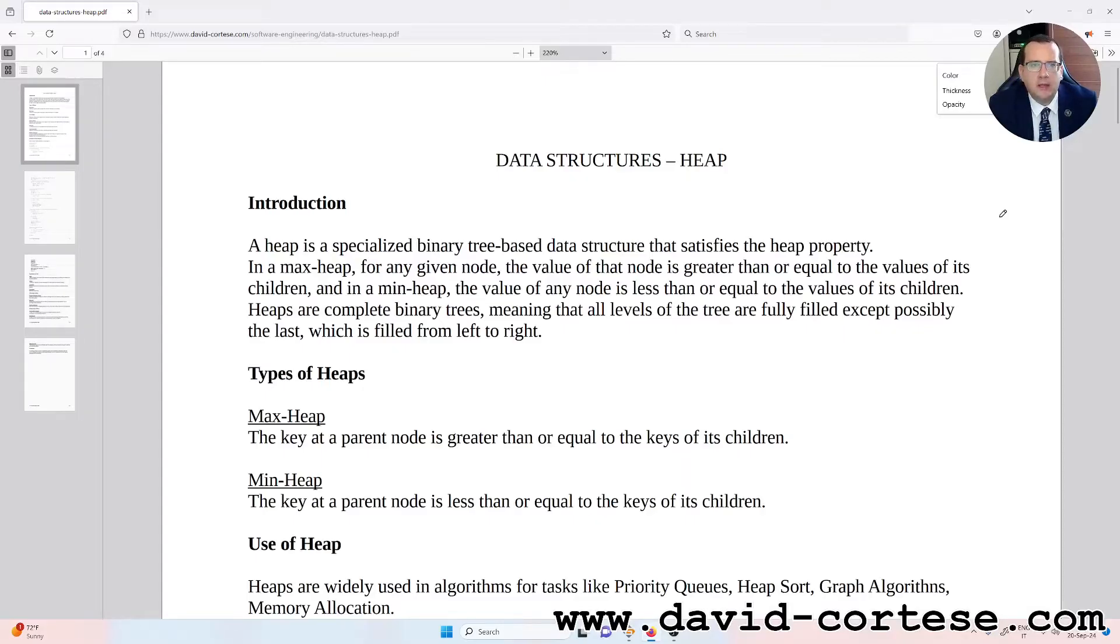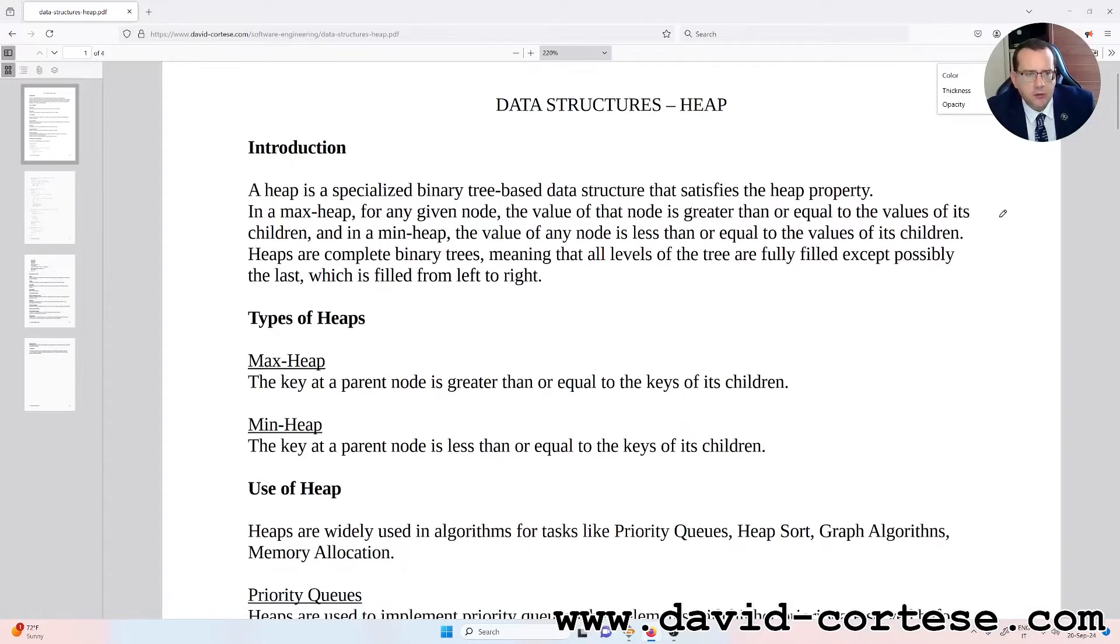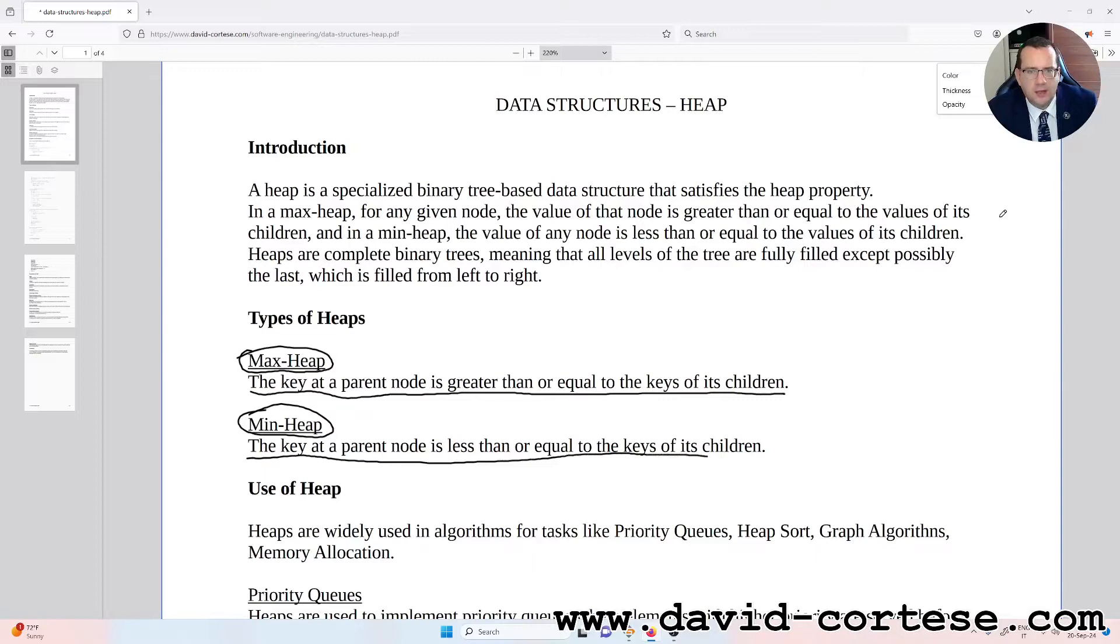Heaps are complete binary trees, meaning that all levels of the tree are fully filled except possibly the last, which is filled from left to right. There are two types of heaps: the max heap, where the key at a parent node is greater than or equal to the keys of its children, and the min heap, where the key at a parent node is less than or equal to the keys of its children.